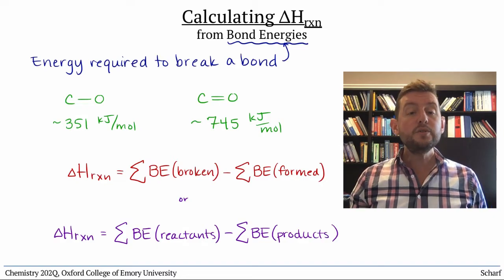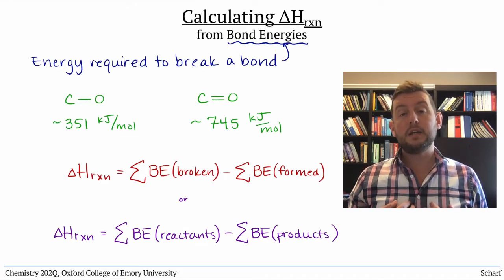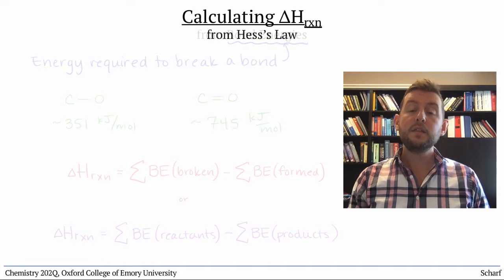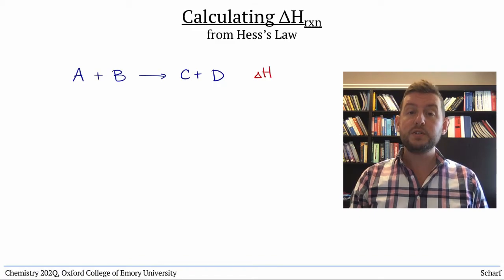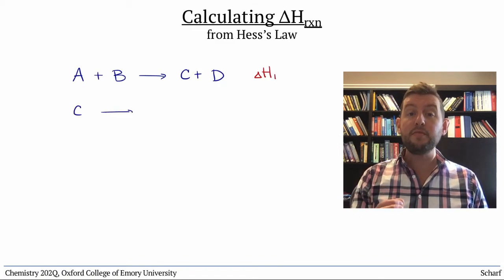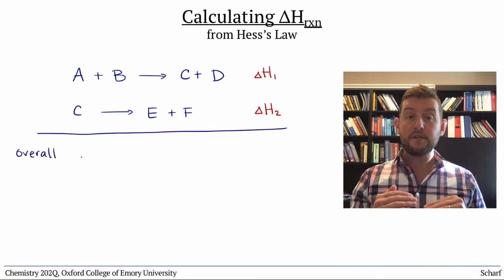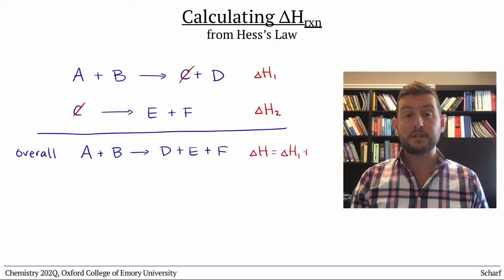There are two additional ways to calculate reaction enthalpy, which we'll use much less frequently in Chem 202, but you should still be aware of. The first is by using Hess's law, which says that if you know the enthalpies of two reactions, then if you add the reactions together, the enthalpy of the new reaction is the sum of the enthalpies of the two original reactions.